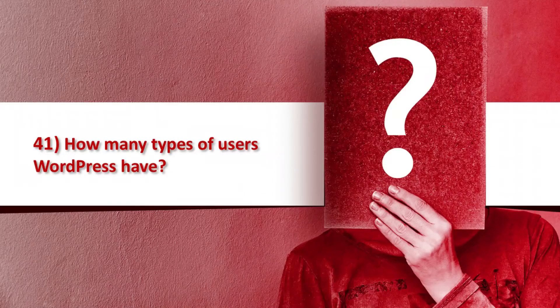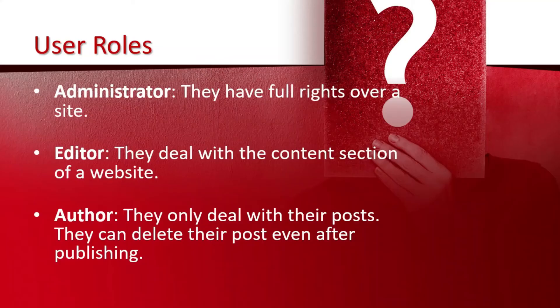Question number 41: how many types of users does WordPress have? The first one is Administrator — they have full rights over our site. Next is Editor — they deal with the content section of our website. Next is Author — they only deal with their posts; they can delete their posts even after publishing.